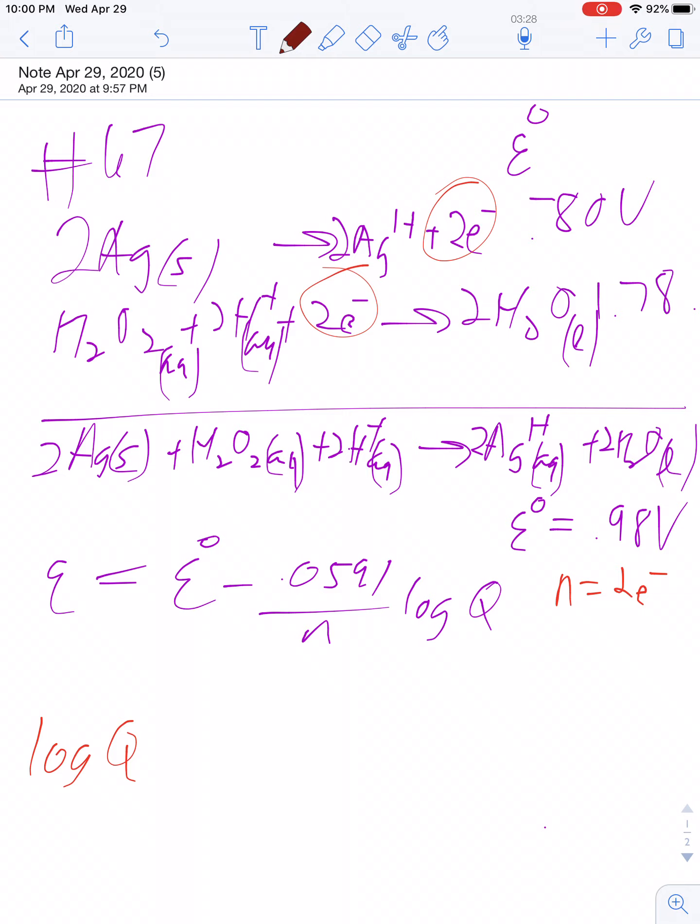So products over reactants. So that's going to be silver ions raised to the second power over hydrogen peroxide raised to the first power. Hydrogen ions raised to the second power. So the solid silver doesn't enter in and the liquid water doesn't enter in.